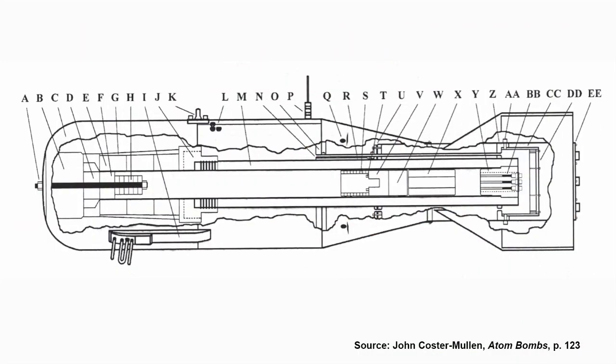Okay, so now it's time to set this thing off. The whole idea of a gun-type bomb is that it brings two subcritical masses of uranium together to form a supercritical mass. Projectile, target, bring them together, boom.